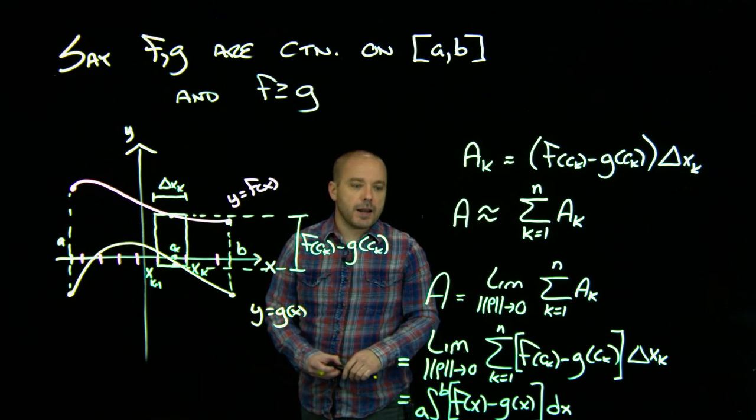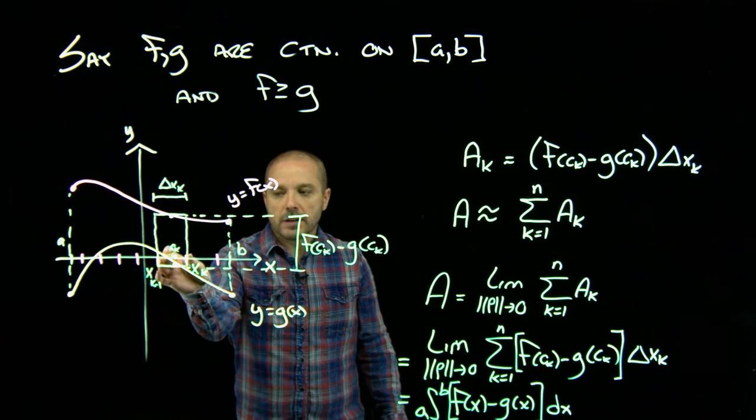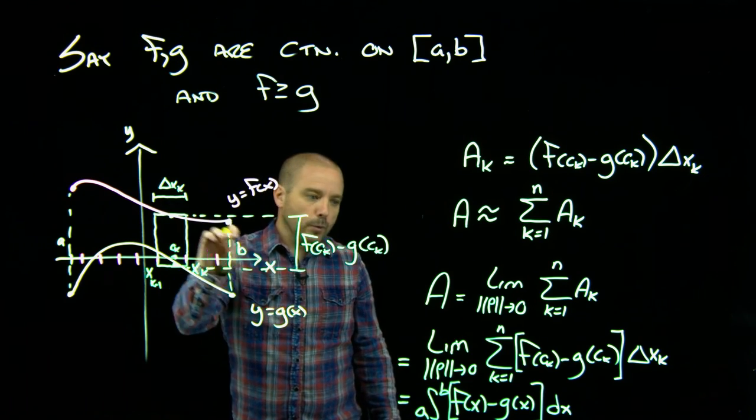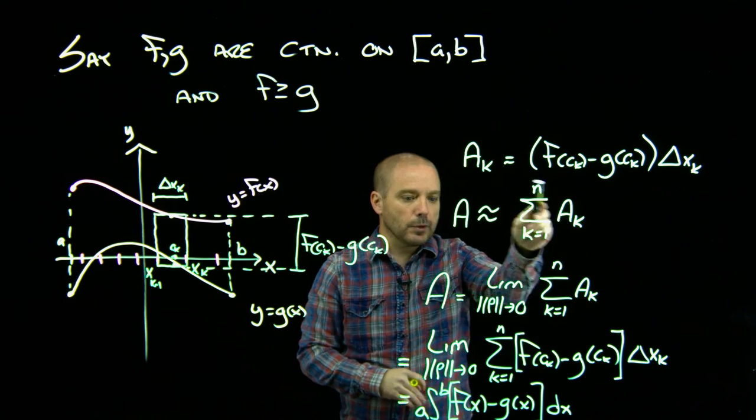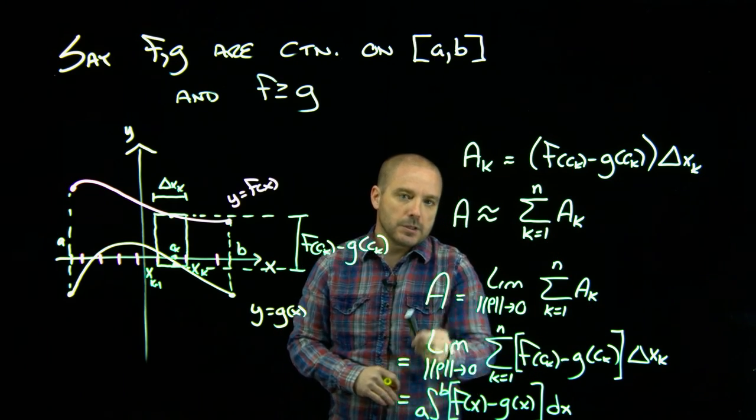Now one question you might have is how do we know that as these shrink down our approximation, which remember this is just an approximation, what guarantees that this actually becomes the exact area?